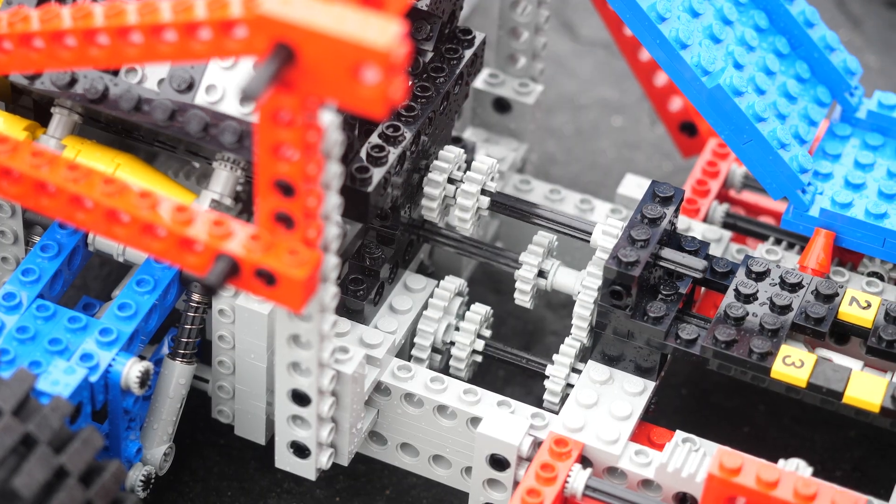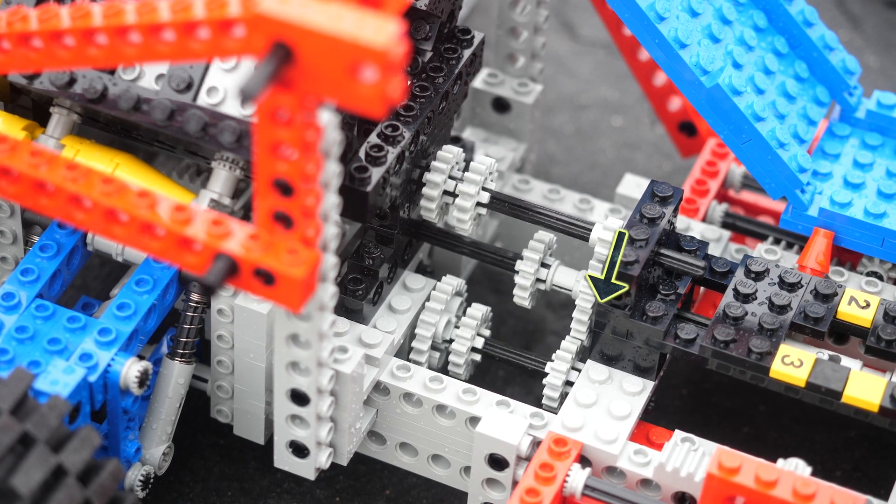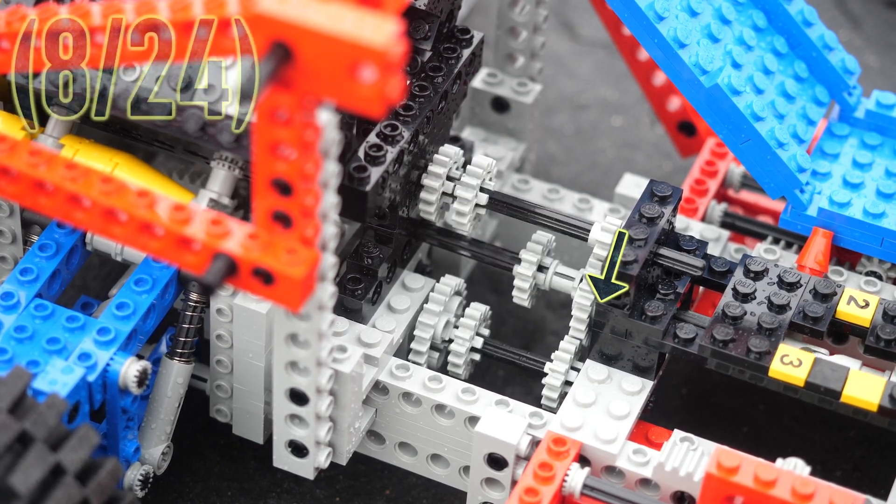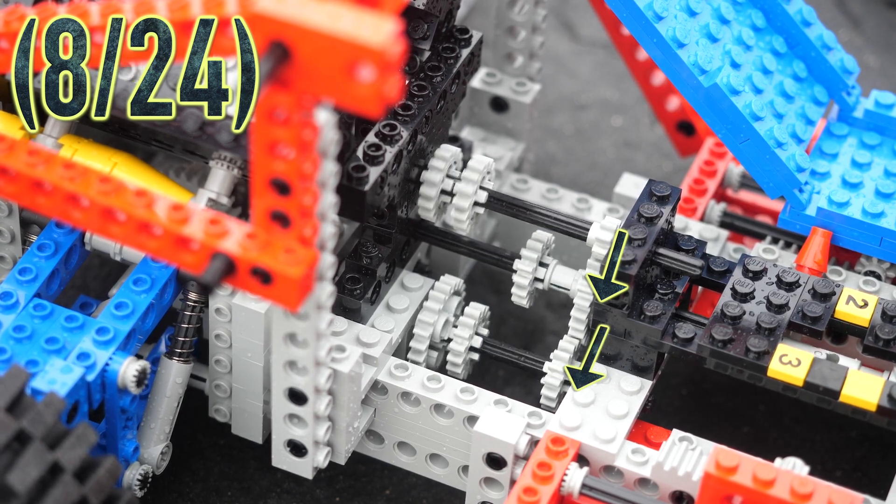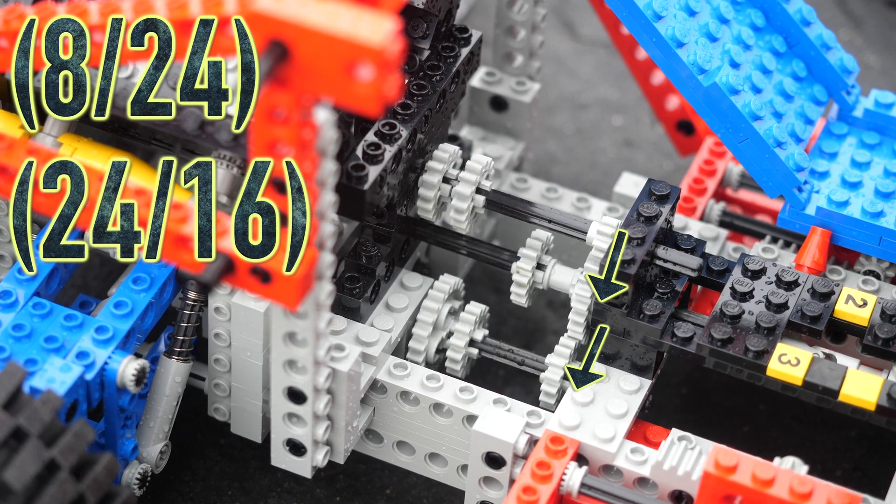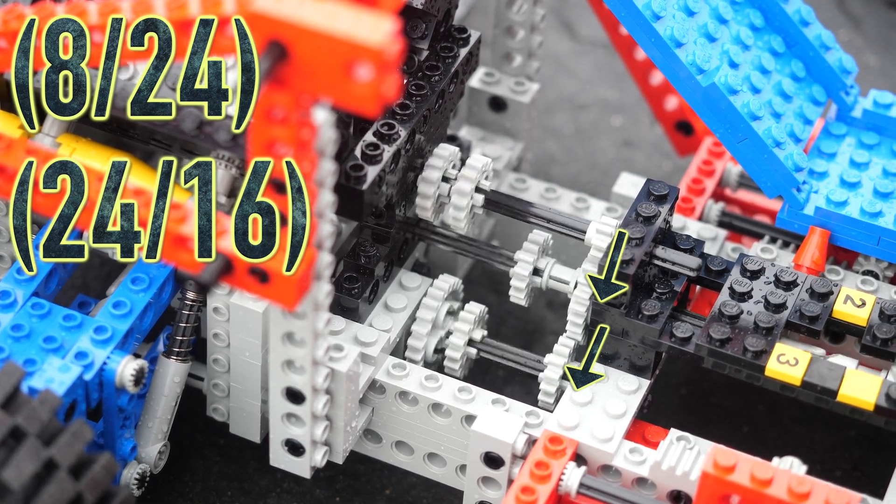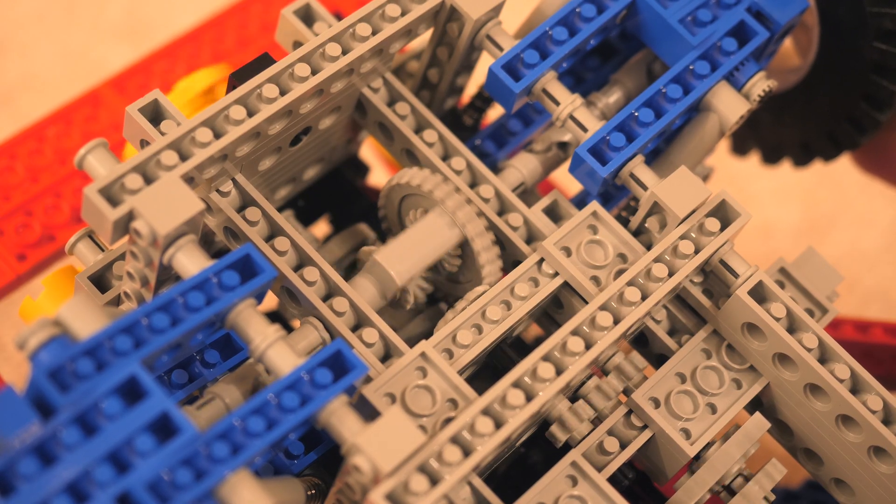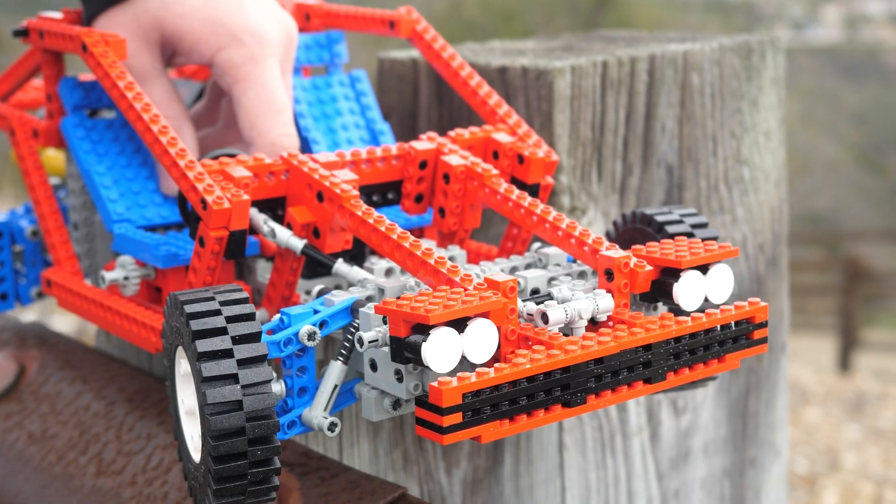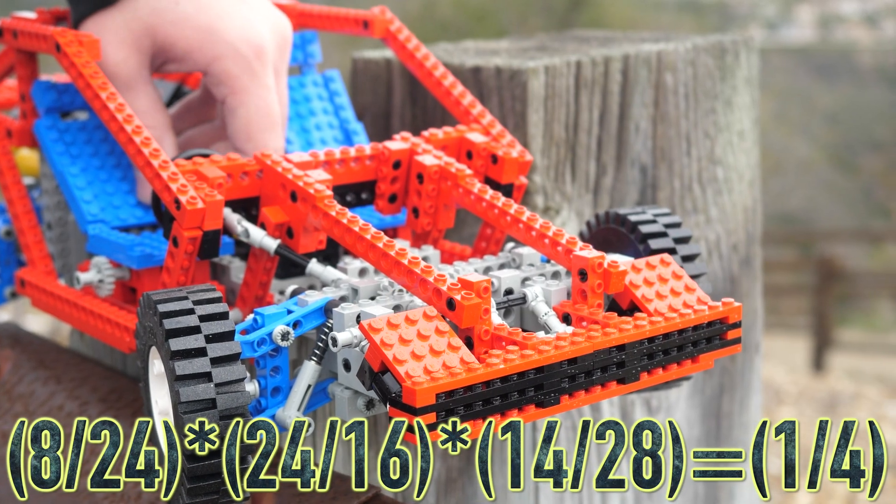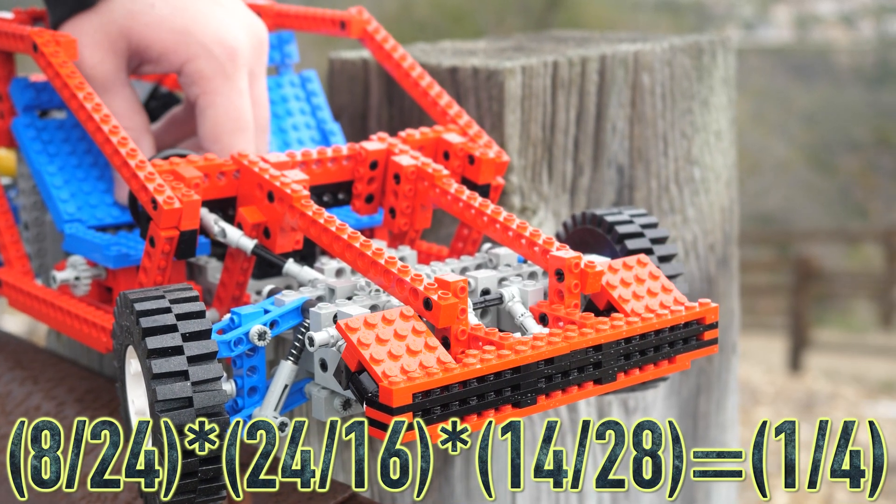In the first gear, the motion travels from the 8-tooth gear to a 24-tooth gear, which gives us a ratio of 8 to 24. Then, the motion goes from the 24-tooth gear to a 16-tooth gear, giving us a ratio of 24 to 16. Then, the axle connects to the differential with a ratio of 14 to 28. To get our final result, we simply multiply all the ratios together, giving us a result of 1 over 4.